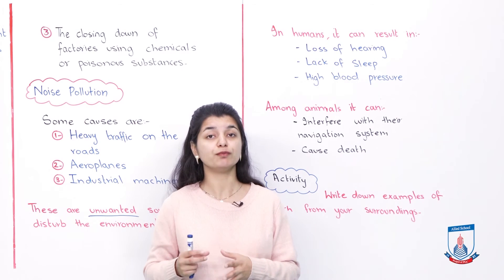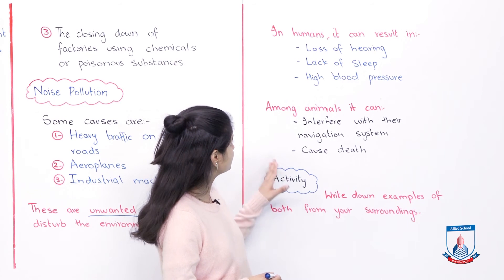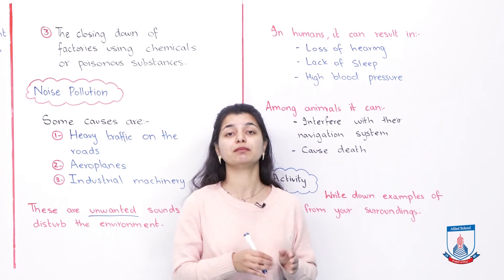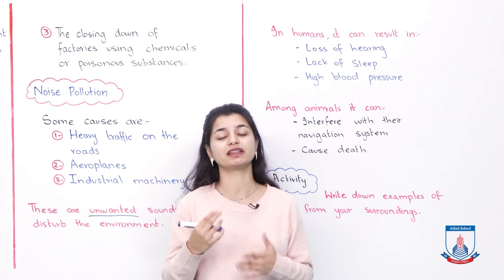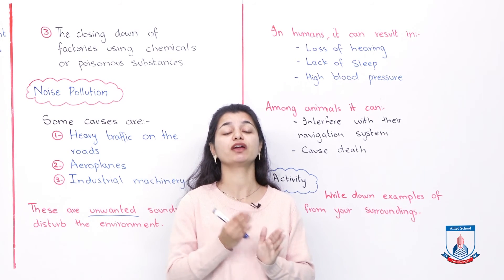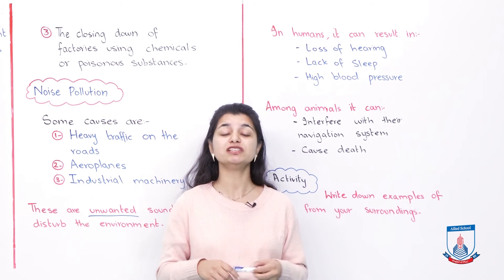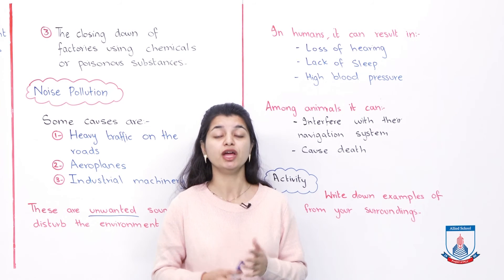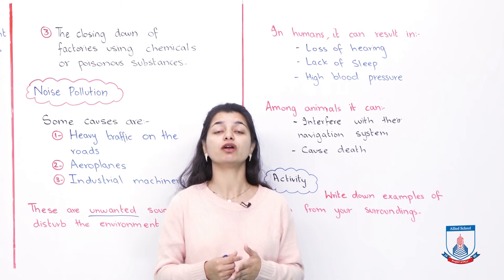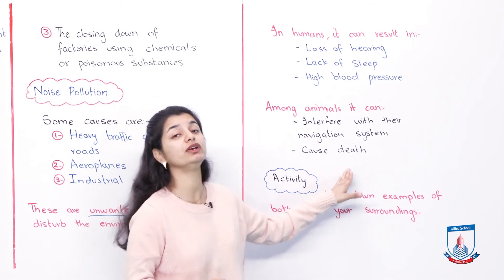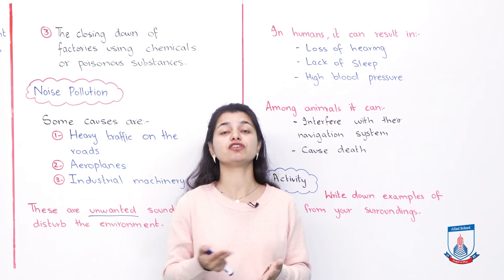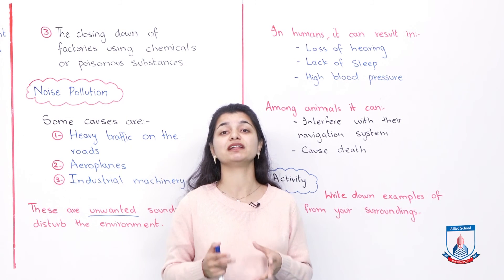Noise pollution doesn't only affect humans — it also affects animals. It can interfere with their navigation systems and even cause death. Animals like bats and dolphins use sound for navigation — they emit sounds and use the echoes to find their way. If there is noise pollution, it interferes with their navigation cycle and they can't send or hear their signals. Because of this, animals can lose their way and sometimes even die.